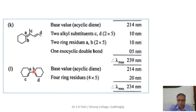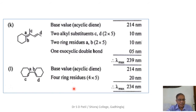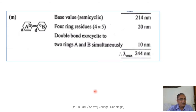In this next structure, even though two rings are present, the diene system is acyclic in form, so the base value is 214 nm. There are four ring residues labeled A, B, C, and D, because they are connected to ring systems. This gives an increment of 4 × 5 = 20 nm, and the total lambda max is 214 + 20 = 234 nm.